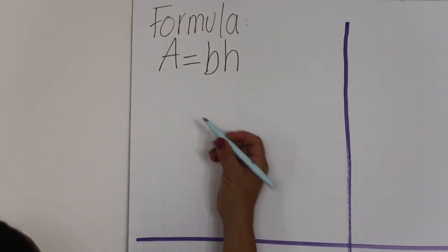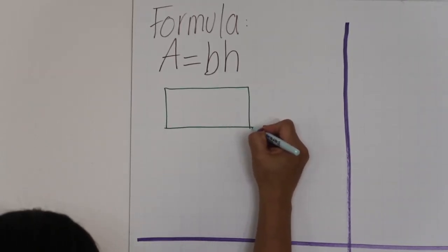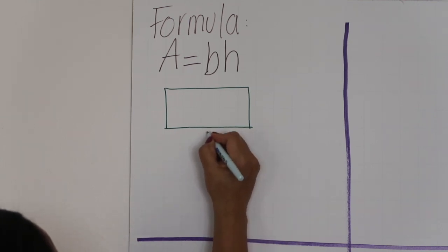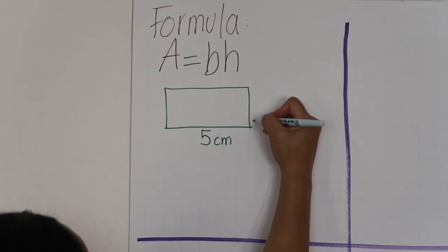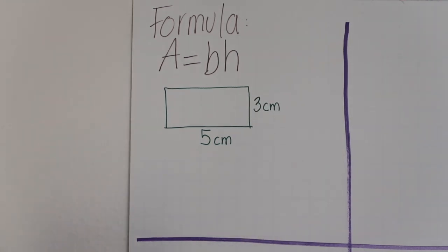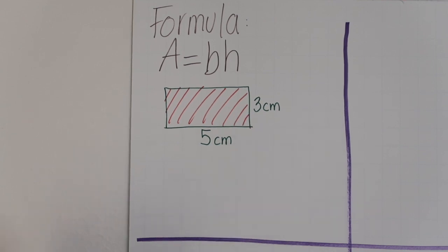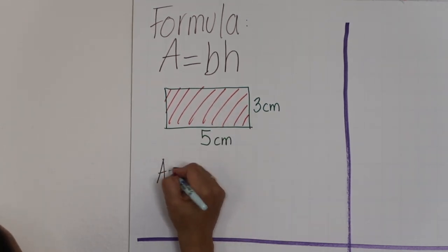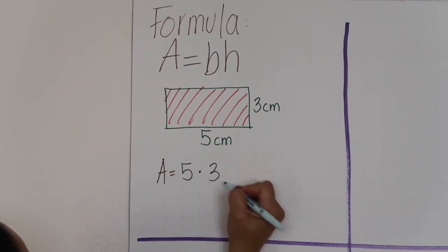For example, here we have a rectangle. The base is 5 centimeters and the height is 3 centimeters. To find the area of this rectangle, you're going to have to apply the formula. So let's start by writing A equals 5 times 3.